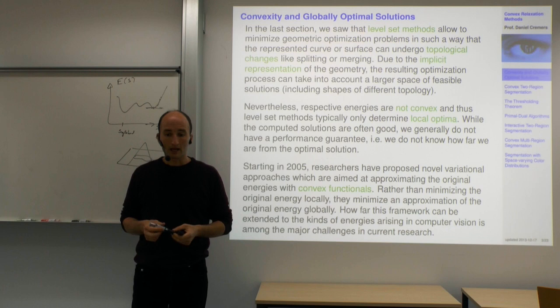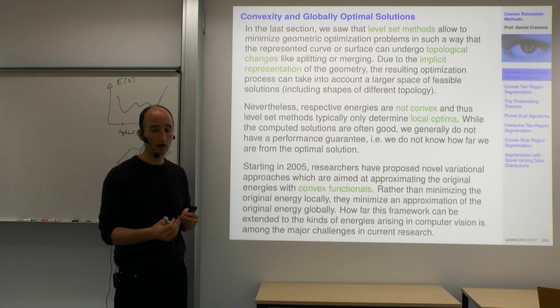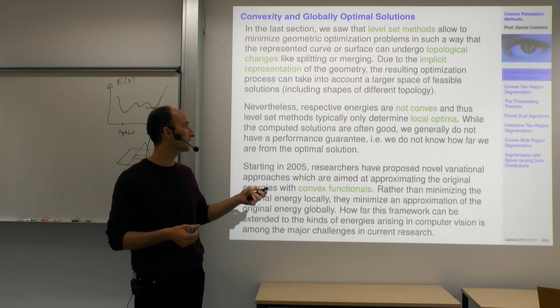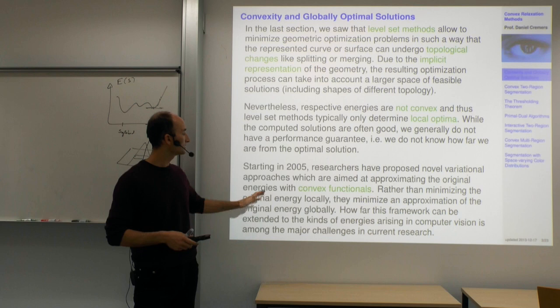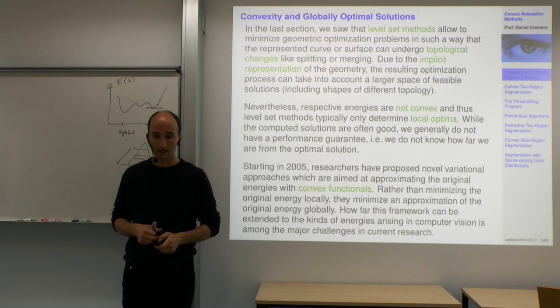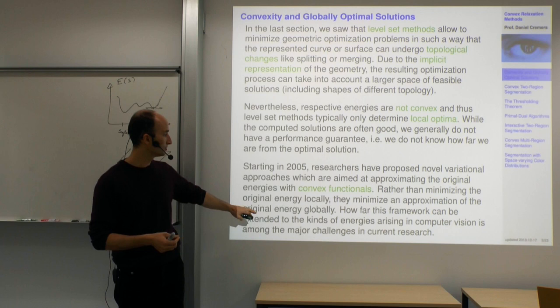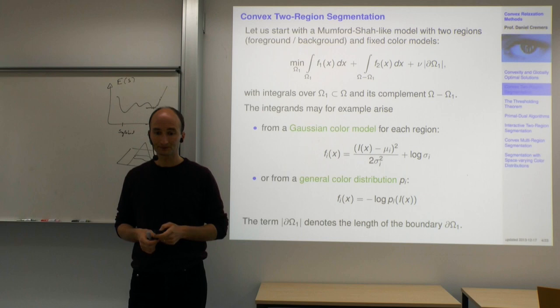How good these local optima are with respect to the global minimum — how far we are from the globally optimal configuration — is typically hard to say for traditional level set approaches. Around 2005, people proposed convexifications that replace the original non-convex energy with a convex one, solve that problem optimally, and then from the optimum of the convex problem try to recover a solution to the original problem. We will start with the two-region segmentation case.